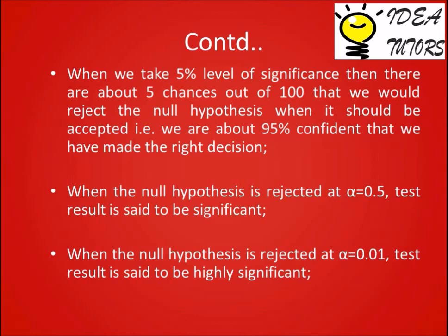When we take a five percent level of significance, there are about five chances out of 100 that we would reject the null hypothesis when it should be accepted — that is, we are about 95 percent confident that we have made the right decision. When the null hypothesis is rejected at alpha equals 0.05, the test result is said to be significant. When the null hypothesis is rejected at alpha equals 0.01, the test result is said to be highly significant.